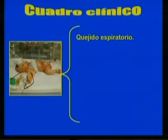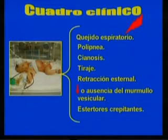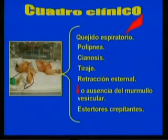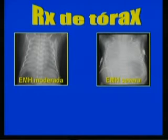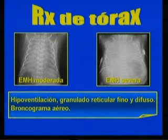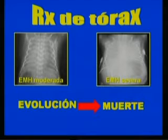The clinical picture is characterized by expiratory grunt, which is the most typical sign of the disease, along with polypnea, cyanosis, retractions, external retraction, decreased or absent vesicular murmur, and occasionally fine crepitant rales. The chest X-ray shows a fairly typical image with hypoventilation, fine and diffuse reticular granulation, and air bronchogram. In the most severe neonates, it can progress to death within hours.